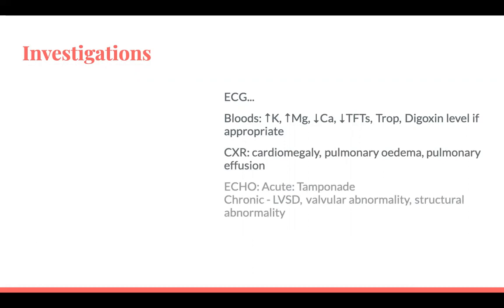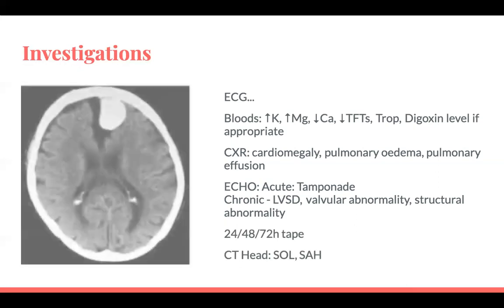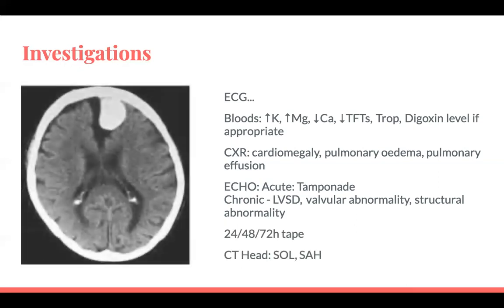Chest X-ray is mainly looking for heart failure. There's not much role for an acute echo unless you're thinking about tamponade — less likely unless there's been chest trauma or MI. Chronically, look for signs of heart failure, LV systolic dysfunction, valvular abnormalities, and structural abnormalities that might lead to scar tissue formation. Consider a CT head if there's focal neurology on examination.